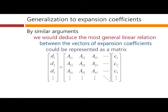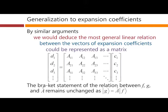So this matrix vector multiplication would be the most general possible way in which we could get a linear operation in which we deduced all these expansion coefficients, our function g, from all these expansion coefficients, our function f. And the bra ket statement of the relation between f and g and the operator A remains unchanged.